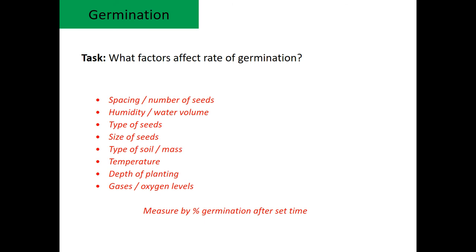The factors affecting the rate of germination include: the number of seeds (because of competition), humidity or water volume (if there's not enough water, enzymes won't be activated), types of seeds (some germinate faster), different sizes of seeds, type of soil (whether it has enough nutrients), temperature (which affects enzymes), depth of planting, and oxygen levels.